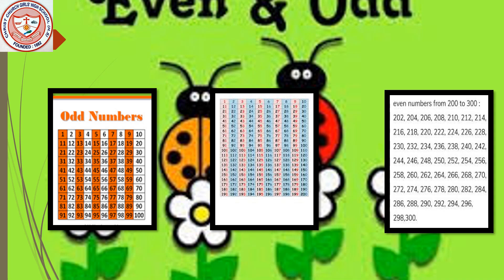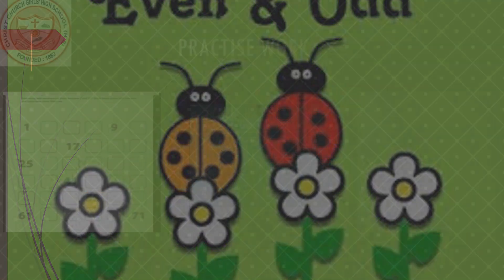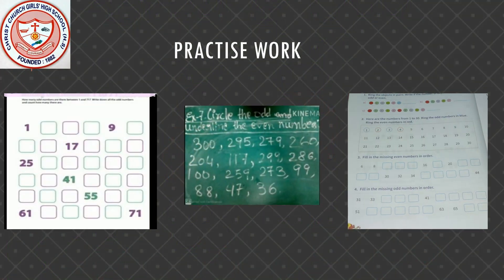Let's do some exercises from your previous class. You have already done exercises like: identify odd or even numbers, write odd numbers from 1 to 71, and circle the odd numbers and underline the even numbers. We are going to discuss the answers. Writing odd numbers from 1 to 71 — what are the numbers?